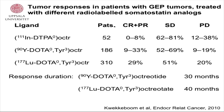In summary of response rates with PRRT: about 30% response rates with both yttrium and lutetium, and stable disease in about 52% — meaning about 80 to 90% of patients have a beneficial effect of this treatment. The response duration is about three years.